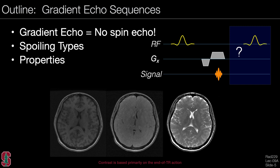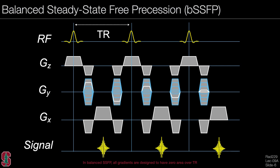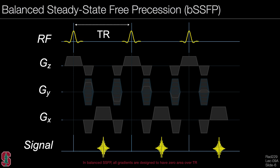Gradient echo sequences often refer to sequences where there is no spin echo. We begin with balanced steady state free precession, or BSSFP. As the name suggests, this sequence has fully balanced gradients — over one repetition, the gradients will integrate to zero on all three axes. In this case, we can actually ignore the effect of the gradients on the signal evolution.